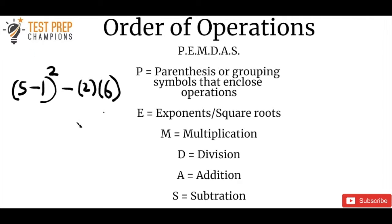When you're solving math questions, like the example on screen here, you see that we've got multiple different operations going on. For example, we've got an exponent, we've got stuff in the parentheses, and we've got multiplication going on over here. So how do you know where to start? That's what we need these rules for — our order of operations rules, also known as PEMDAS.